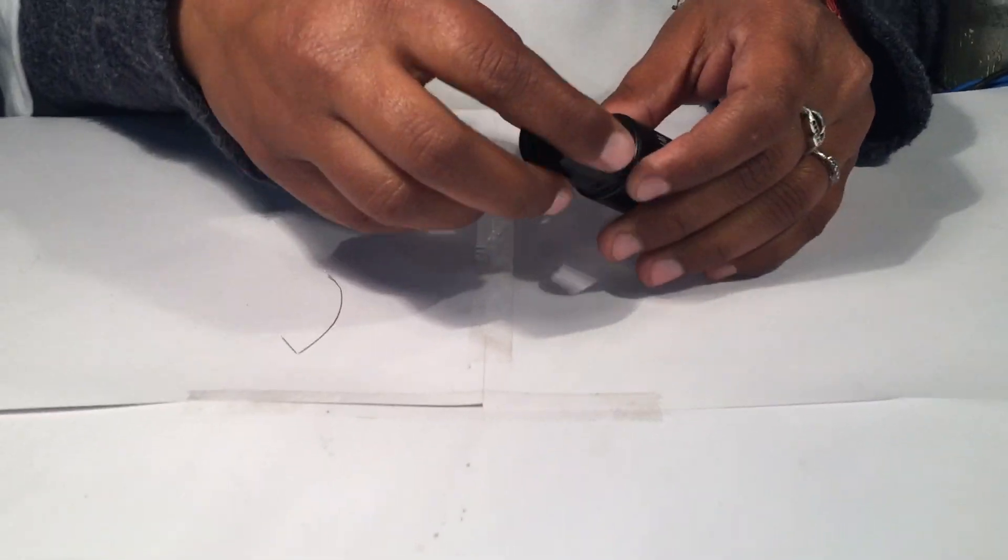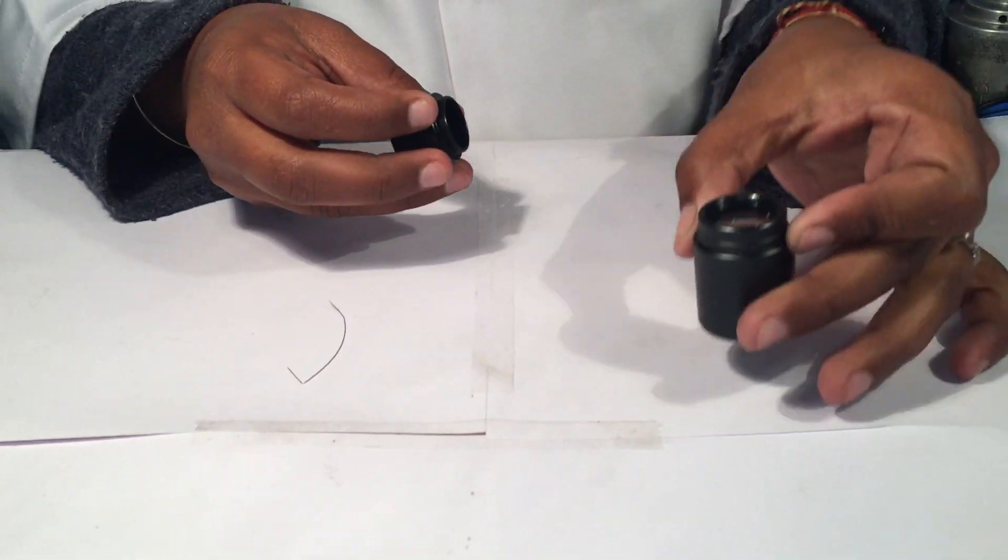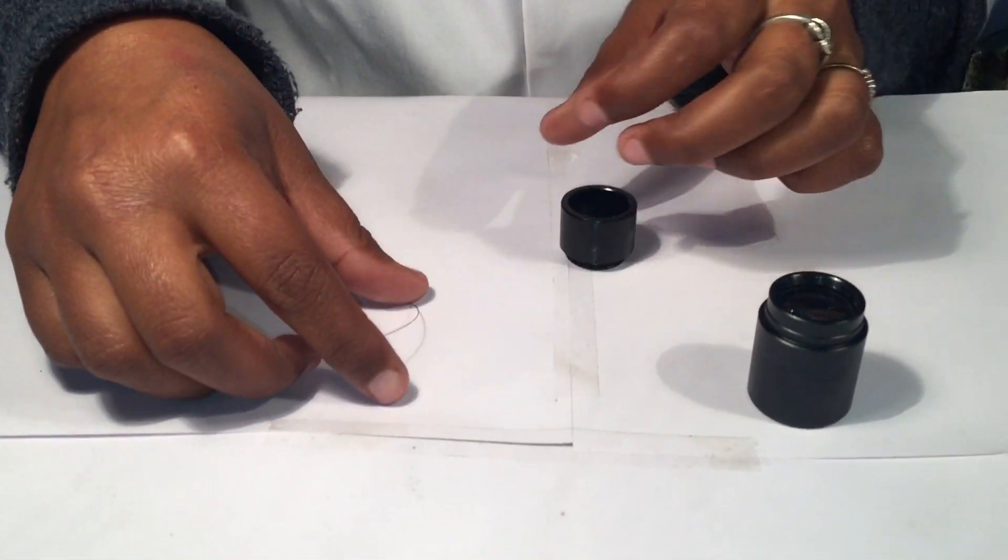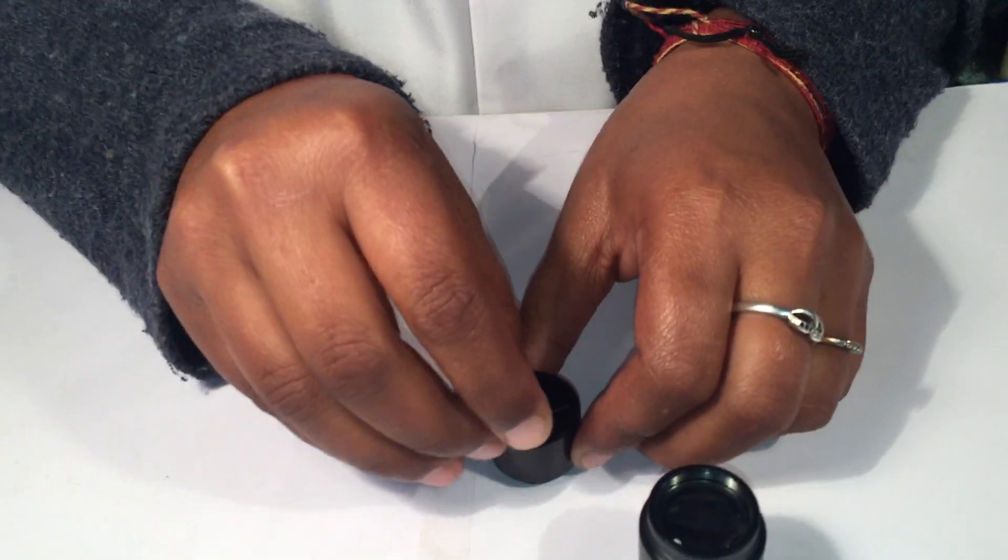We will unscrew the lower part of the eyepiece, take the pointer, and place it in the groove.